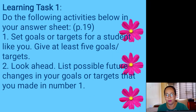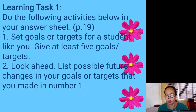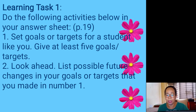For Learning Task number one, found on page 19 in your module: do the following activities. Set number one — set goals or targets for a student like you; give at least five goals or targets. Set number two — look ahead at possible future changes in the goals or targets that you made in number one.